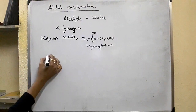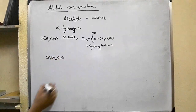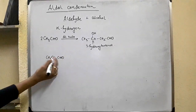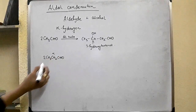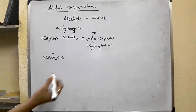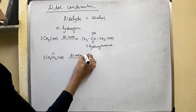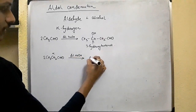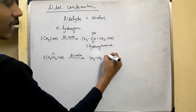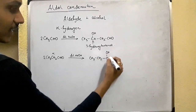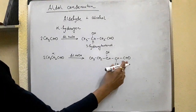Let's take another example: CH3-CH2-CHO, this is propanal. This is the alpha-carbon and there are two alpha-hydrogens. So obviously it will undergo self-condensation in the presence of a dilute base, and we get a beta-hydroxy aldehyde, another name being 3-hydroxy-2-methyl-pentanal.